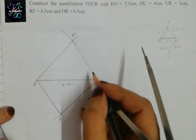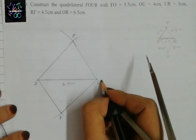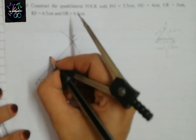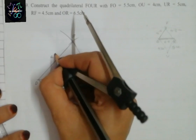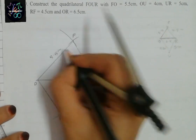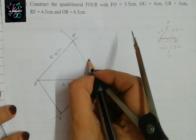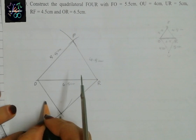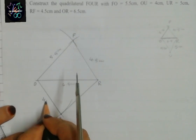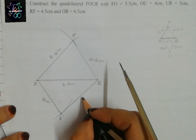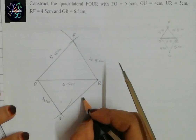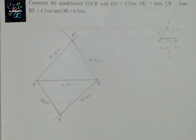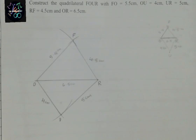So FOUR is the required quadrilateral: OF is 5.5 cm, FR is 4.5 cm, OU is 4 cm, and UR is 5 cm. This completes question number 29.